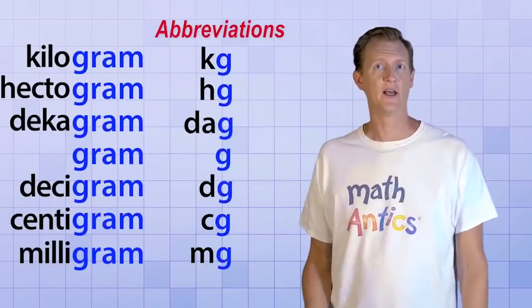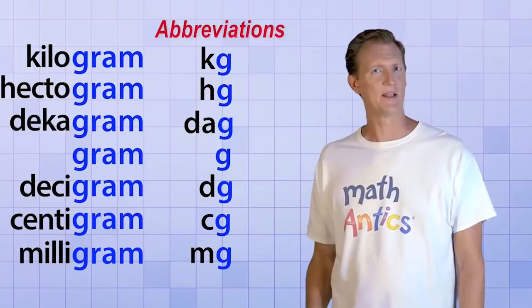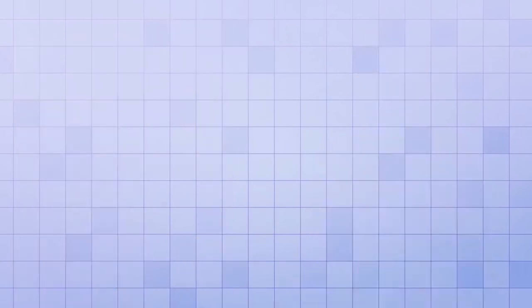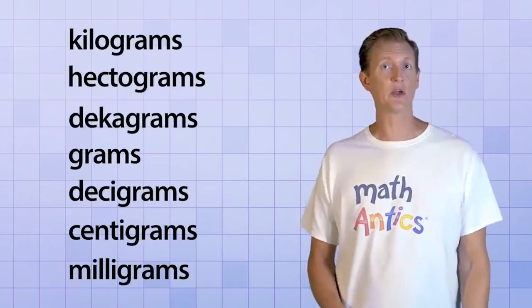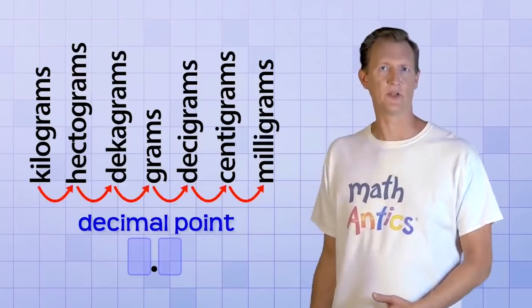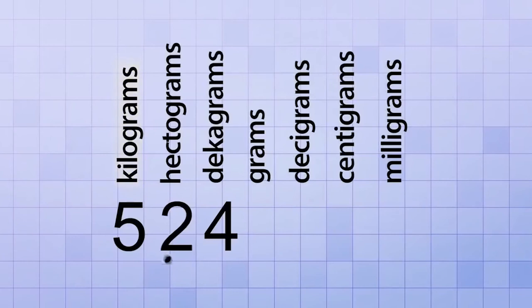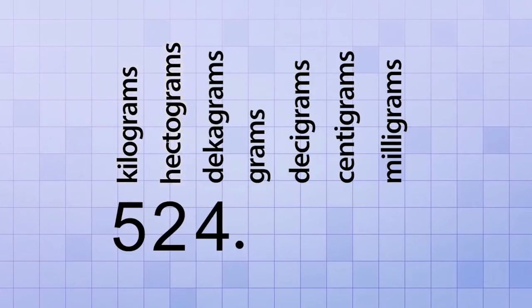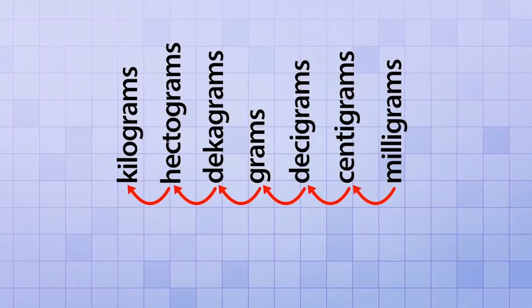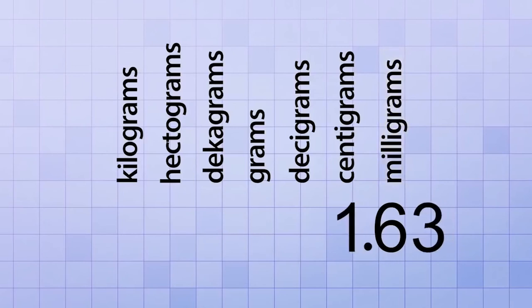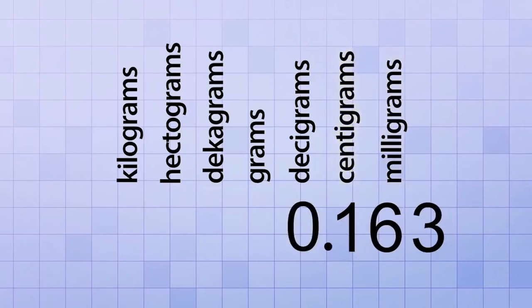All of these units of mass have abbreviations. The pattern of abbreviation is similar to the metric units of length, but instead of an M for meters, you use a G for grams. KG is kilograms, MG is milligrams, and so on. Because these units of mass are based on powers of 10, you can convert between them just by shifting the decimal point. 5.24 kilograms is the same as 52.4 hectagrams, which is the same as 524 decagrams, which is the same as 5240 grams. And 16.3 milligrams is the same as 1.63 centigrams, which is the same as 0.163 decigrams, which is the same as 0.0163 grams.